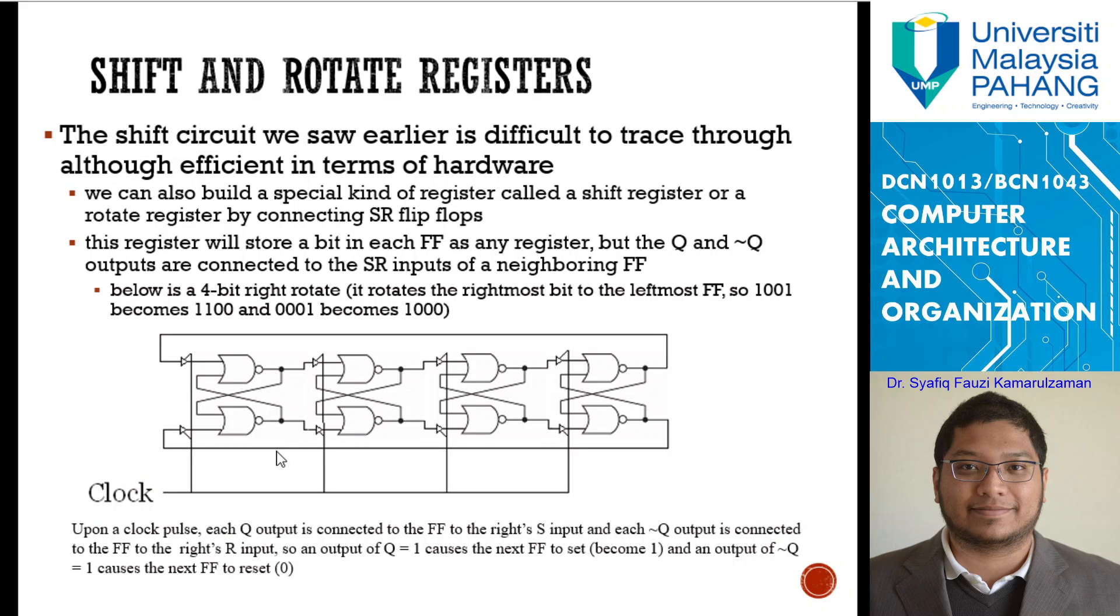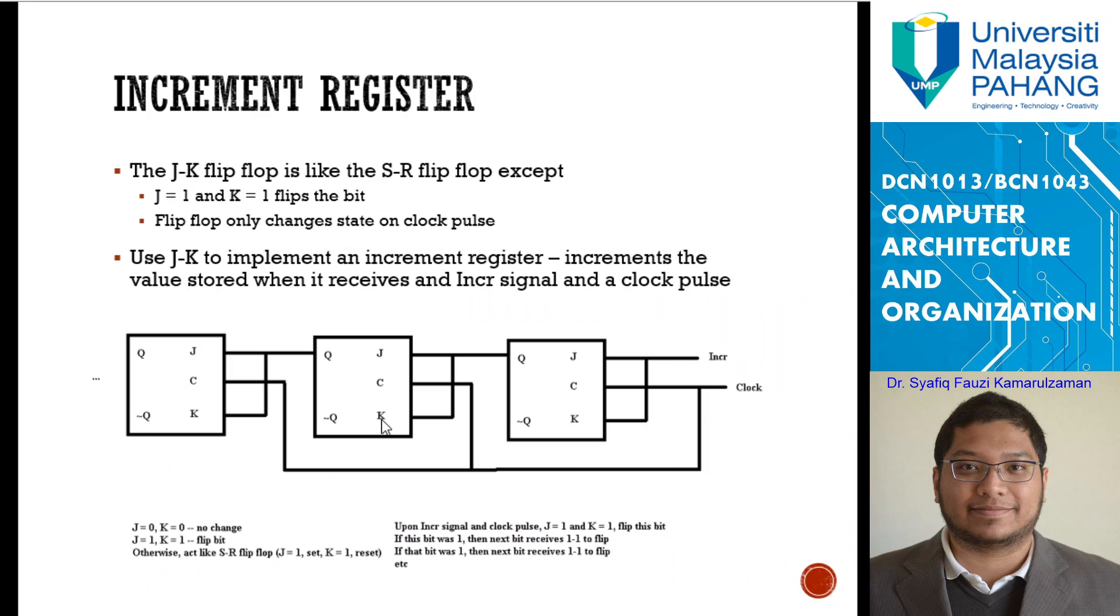We have shift and rotate registers. We can build a special kind of register called a shift register or a rotate register by connecting SR flip-flops. Here, in this case, we have 4 SR flip-flops. The Q and Q bar outputs are connected to the SR inputs of a neighboring flip-flop. Below is a 4-bit right rotate. It rotates the rightmost bit into the leftmost flip-flop. 1-0-0-1 becomes 1-1-0-0.